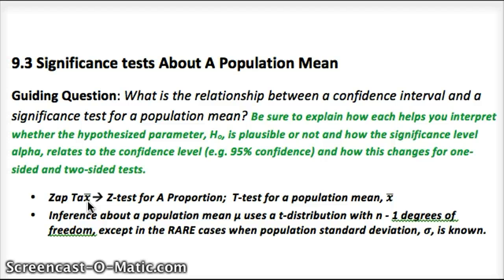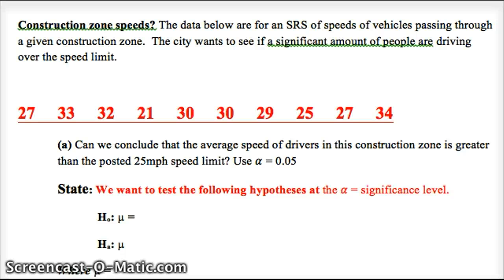So when we use t, remember we use n-1 degrees of freedom. So we're going to look at it through the lens of an example problem.